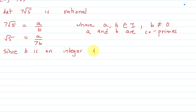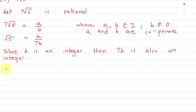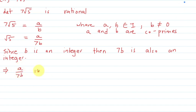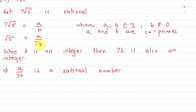Since b is an integer, then 7b is also an integer. This implies that a upon 7b is a rational number, because a is an integer, b is an integer, 7b is also an integer, and b is not equal to 0.